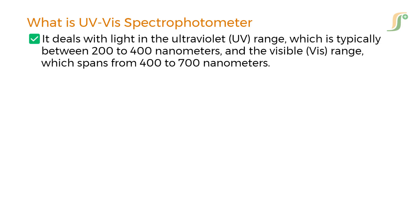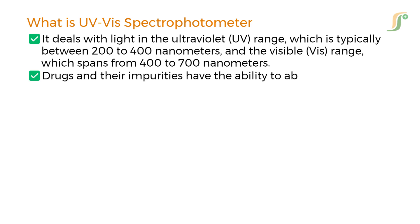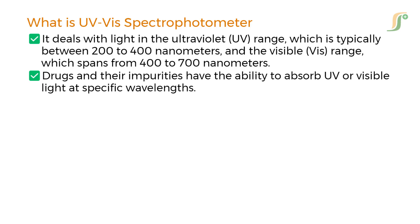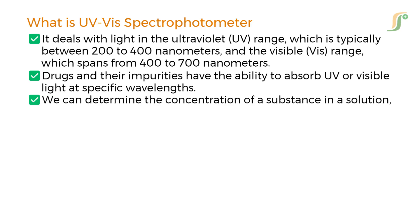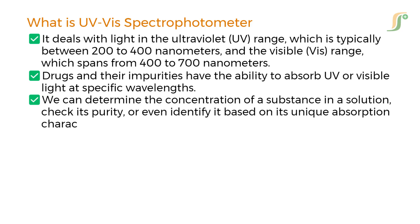Why does this matter in pharmaceuticals? Many pharmaceutical compounds, especially drugs and their impurities, have the ability to absorb UV or visible light at specific wavelengths. By measuring how much light is absorbed at a certain wavelength, we can determine the concentration of a substance in a solution, check its purity, or even identify it based on its unique absorption characteristics.